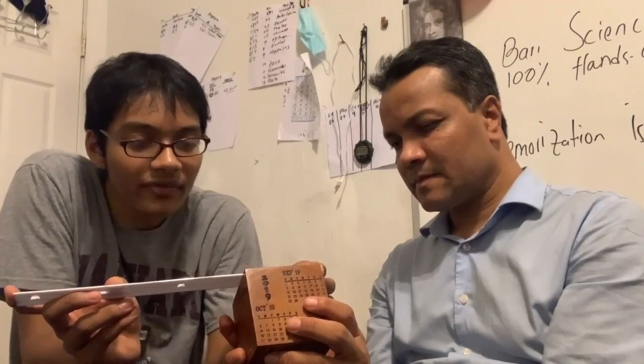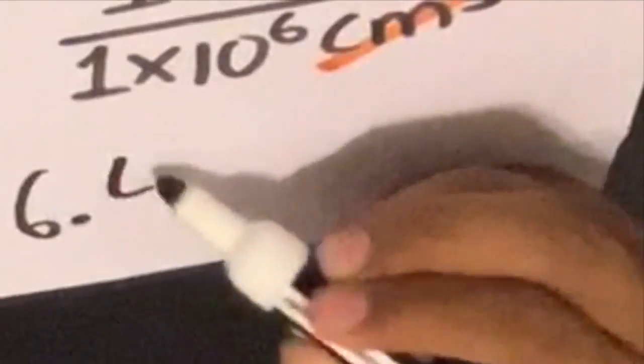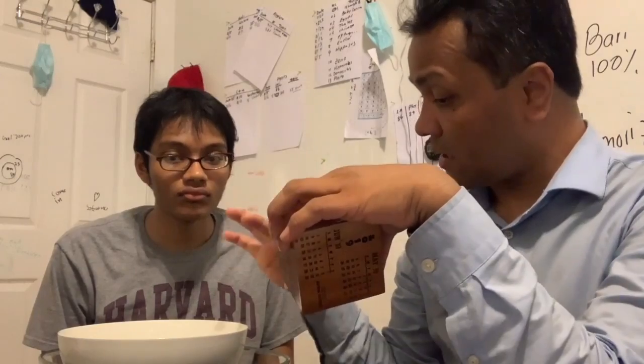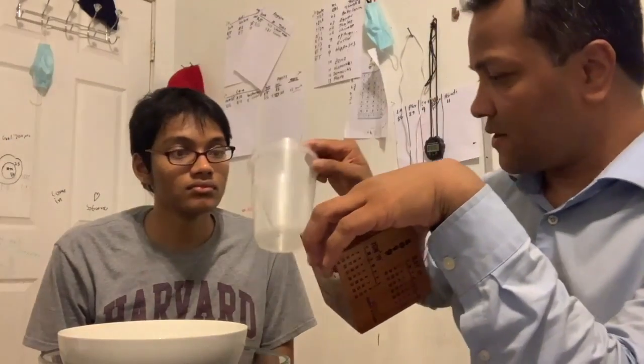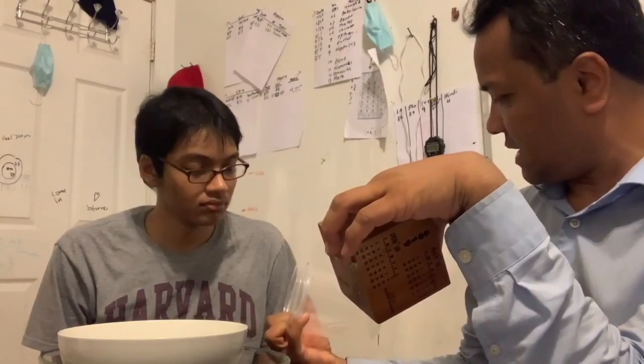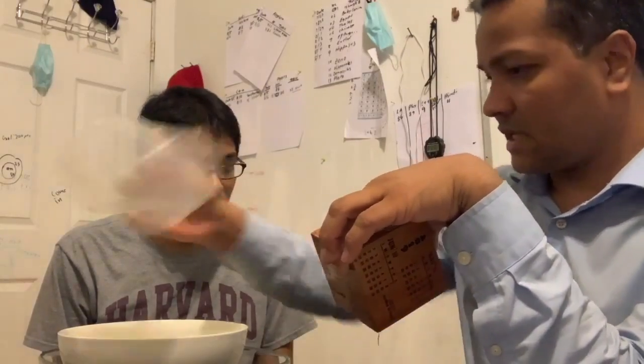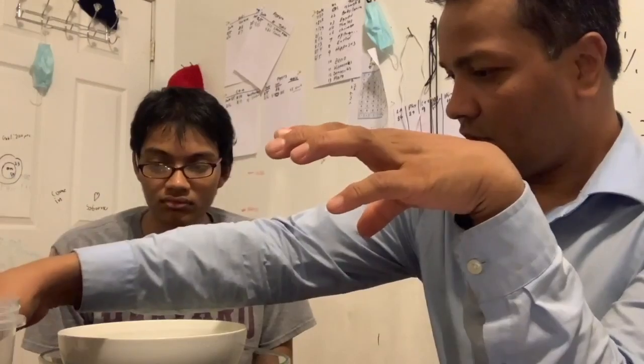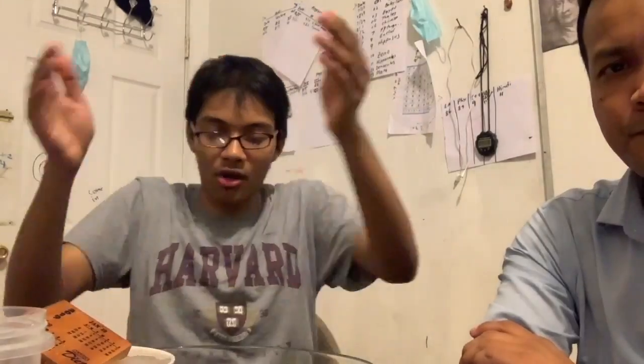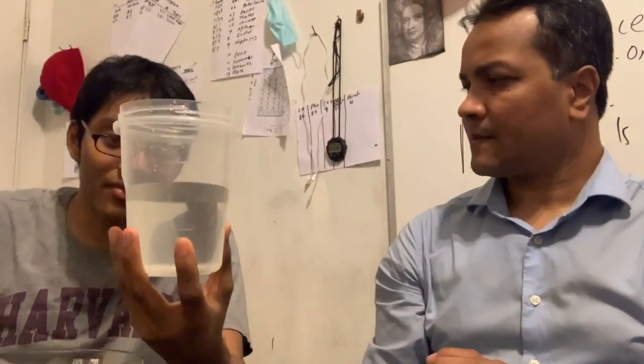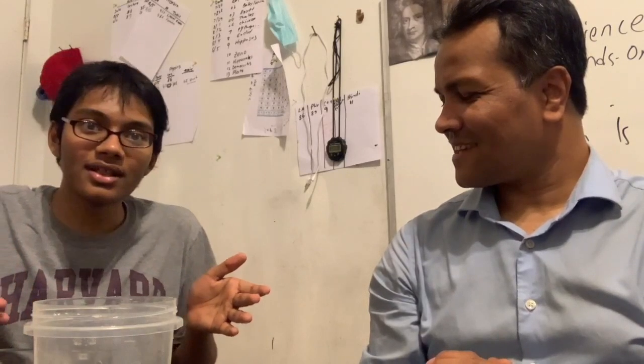You have to find the volume: 8.5 centimeter gives 6.4 times 10 to the negative 4 cubic meter. Merge this cube into the water and measure the displaced water using the milliliter markings to find the volume. How much water was displaced? 640 milliliters — convert that to cubic meter and you get 6 times 10 to the minus 4 cubic meters.